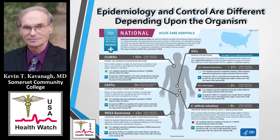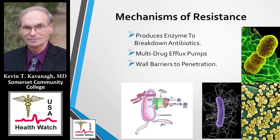Mechanisms of resistance include enzymatic production by bacteria that breaks down the antibiotic, multidrug efflux pumps which stimulate bacteria to pump out antibiotics, and barriers preventing antibiotic penetration of cell walls. Importantly, resistance stimulated by one class of antibiotics can cause resistance to other classes. Multidrug efflux pumps pump out numerous classes at once. Similarly, plasmids transmitting DNA for resistance can carry multiple segments coding for resistance to multiple antibiotic classes.